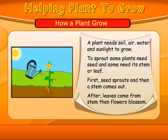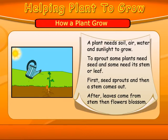First, a seed sprouts and then the stem comes out. After that, leaves come from the stem, then flowers blossom.